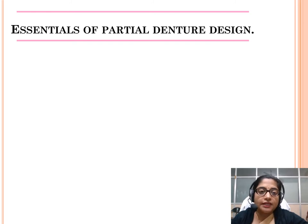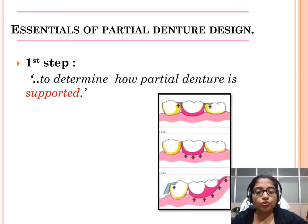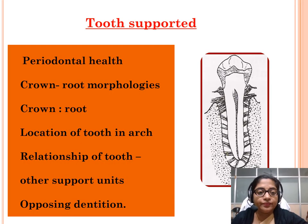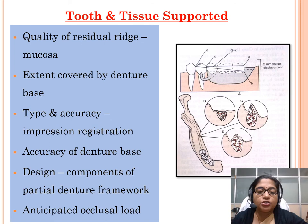Now, let us look at the essentials of partial denture design. The first step is to determine how the partial denture is supported — tooth-supported or tooth-and-tissue-supported. For tooth-supported partial dentures, we consider periodontal health, crown-root morphologies, crown-root ratio, location of the tooth in the arch, and relationship with the opposing dentition. For tooth-and-tissue-supported partial dentures, we consider the quality of the residual ridge mucosa, extent covered by the denture base, impression registration accuracy, denture base design, framework components, and anticipated occlusal load.